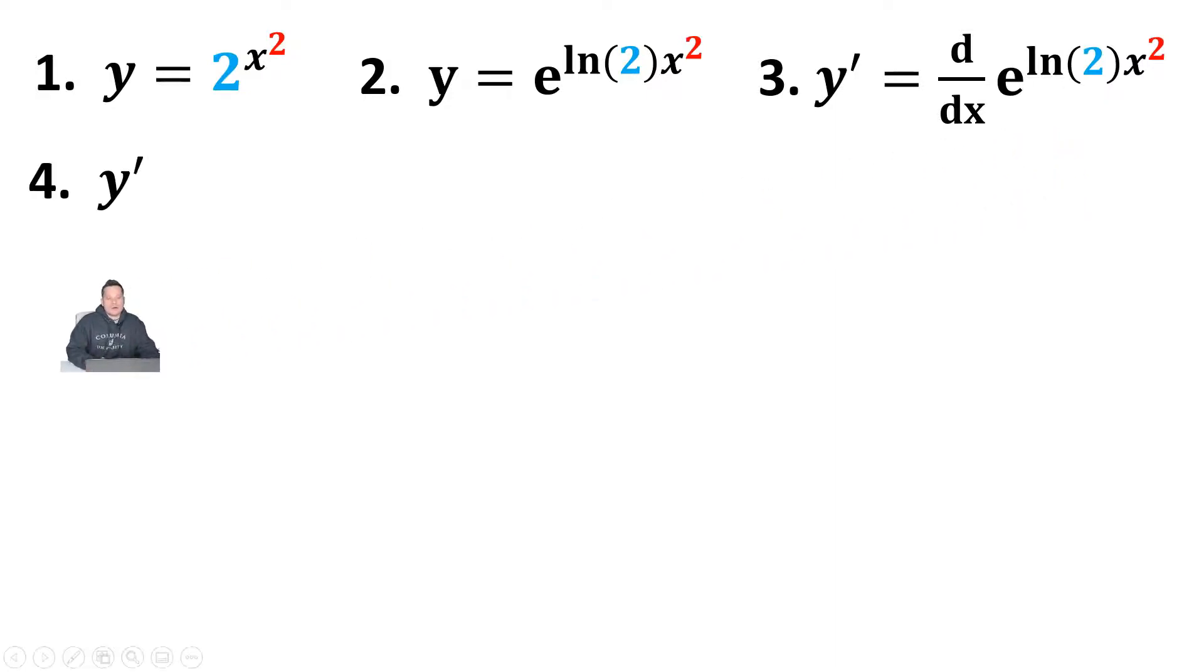So it's going to be y prime will be equal to the following: e to the ln of that blue 2 times x squared. That portion is copied as usual when you find the derivative of things that have e raised to some exponent in them. The next part is to then multiply by the derivative of the exponent, which would be the derivative here of ln of 2 multiplying x squared. Well, that part can be done pretty easily.